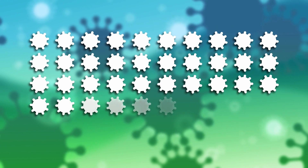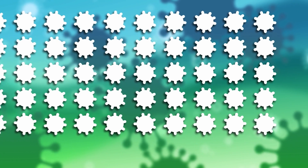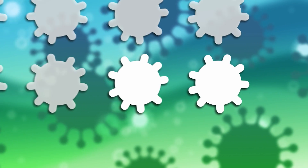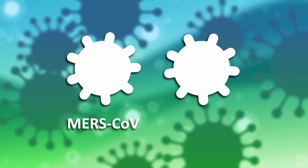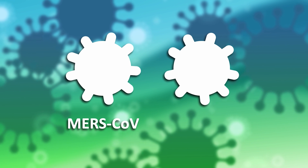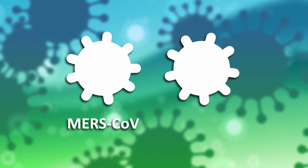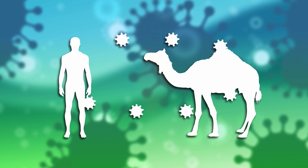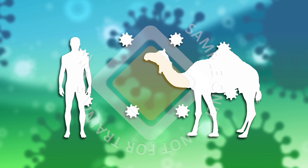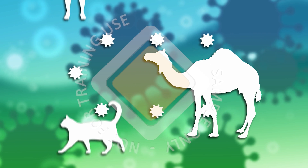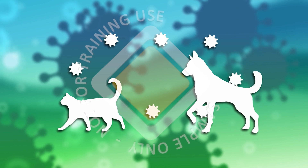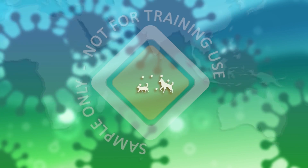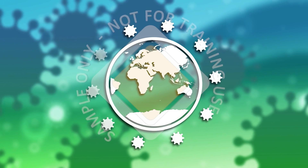Coronaviruses are a large group of viruses that can cause illnesses ranging from the common cold to more severe diseases, such as Middle East Respiratory Syndrome and Severe Acute Respiratory Syndrome. Coronaviruses can be transmitted between animals and people. Several known coronaviruses are circulating in animals that have not yet infected humans. As a family, coronaviruses are common across the globe.